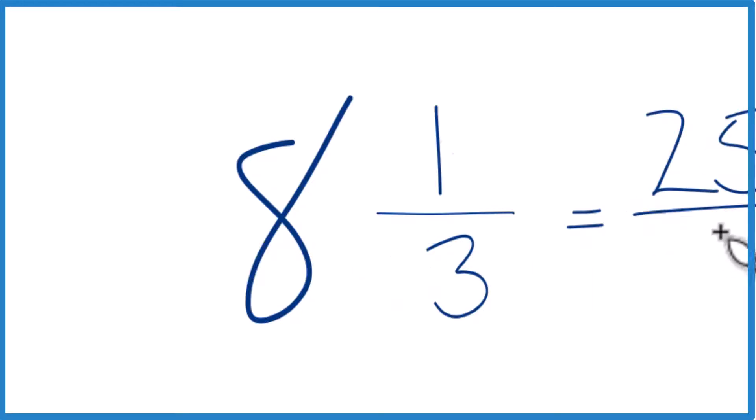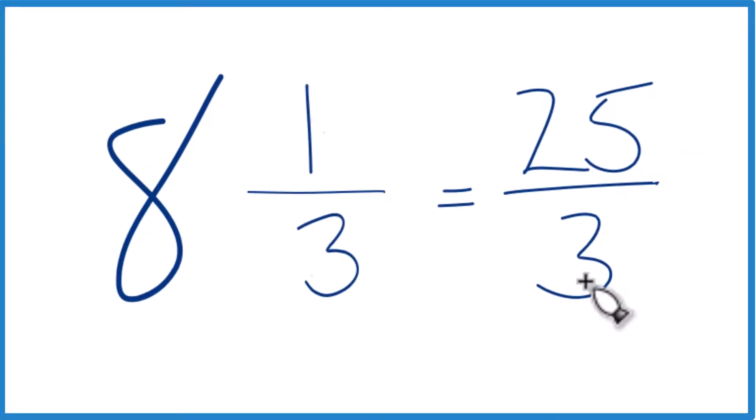Then you just bring that 3, the denominator, across. And the improper fraction, 25 thirds, that's the same thing as the mixed number, 8 and one-third. They have the same value, just representing this as an improper fraction here.